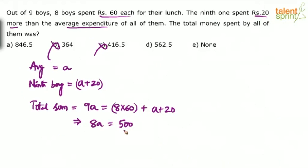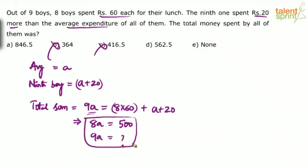What do we want? Nine A — the total money spent by all of them. Total money is nothing but nine A. So if eight A is 500, nine A equals what? Cross multiply and you get the answer. Or find the value of A from this and then multiply by nine.